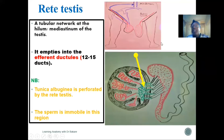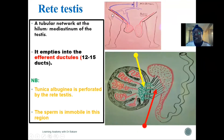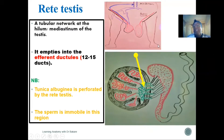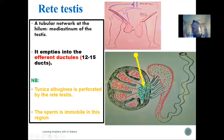From the efferent ductules, sperm moves to the epididymis, then to the vas deferens. The vas deferens travels through the inguinal canal — a tube running inferomedially allowing structures to pass from the perineal region into the pelvic cavity. It then becomes the ejaculatory duct, then the urethra, through which contents are emptied into the female reproductive system or outside.